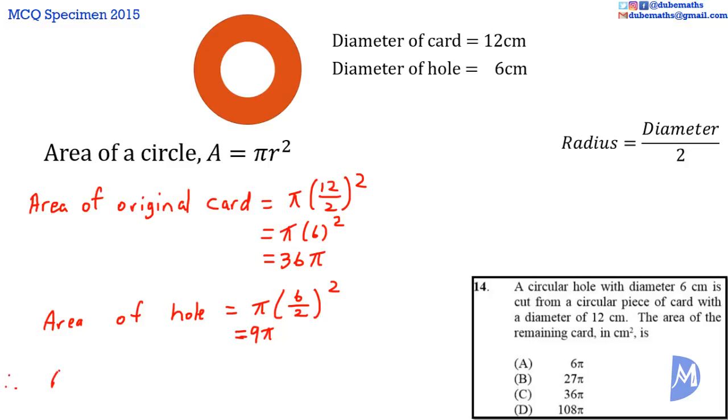Therefore, the area of the remaining card is equal to 36 pi minus 9 pi. 36 minus 9 is equal to 27. 27 pi. The answer is B.